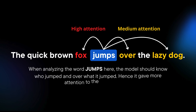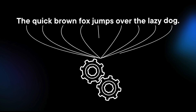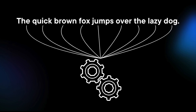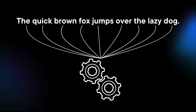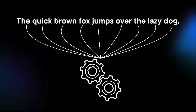Transformers use a mechanism called Attention to weigh the importance of different parts of the input data. This allows the model to focus on relevant parts of the input when generating new content. Unlike previous models that processed data sequentially, Transformers process all data points simultaneously, making them highly efficient and capable of capturing complex patterns.